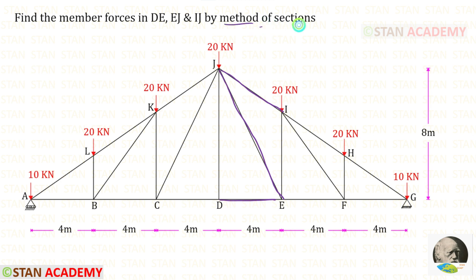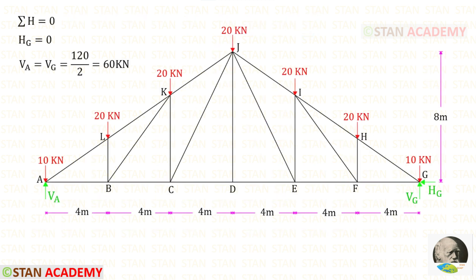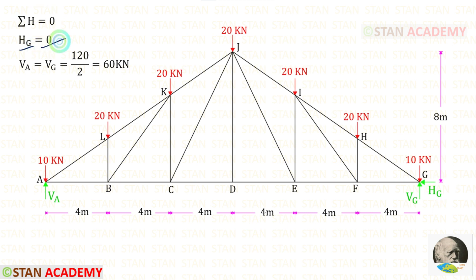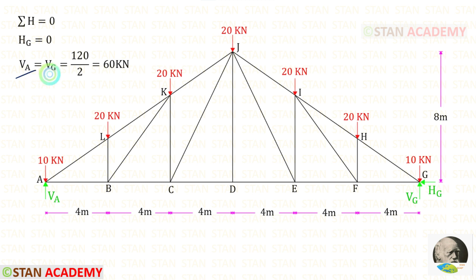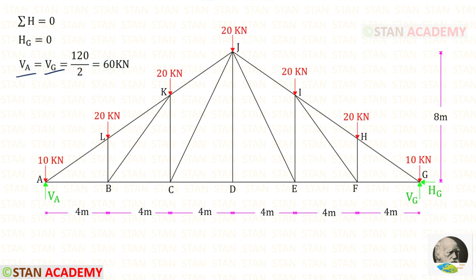We are going to use the method of sections. Now, let us find the reactions. First, let us find Hg. Since there is no horizontal load, Hg will be 0. This truss is symmetrical and the loading is also symmetrical, so we can easily find Va and Vg. To find Va and Vg, we add these loads — we get 120 — and then divide by 2. For Va and Vg, we will get 60 kN.